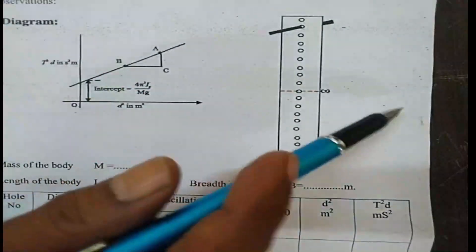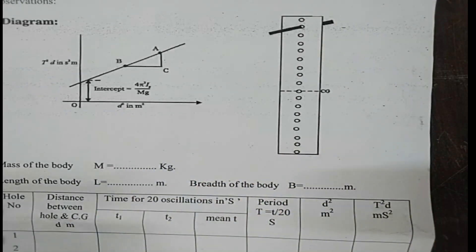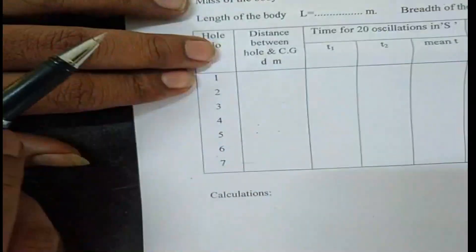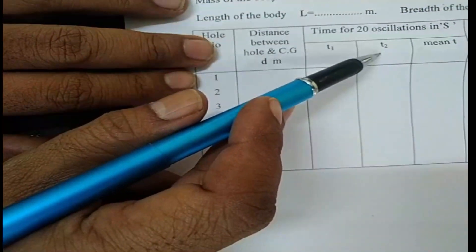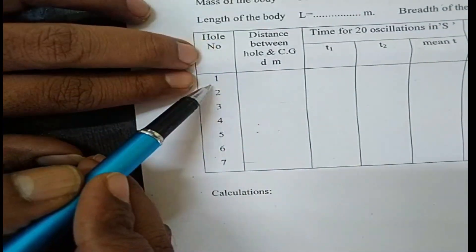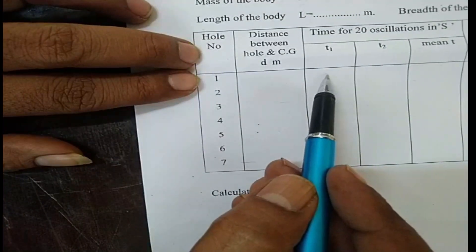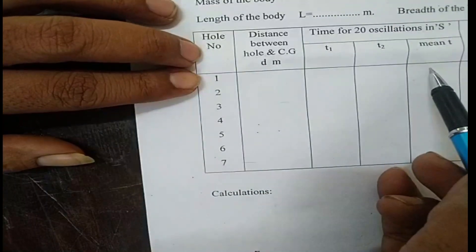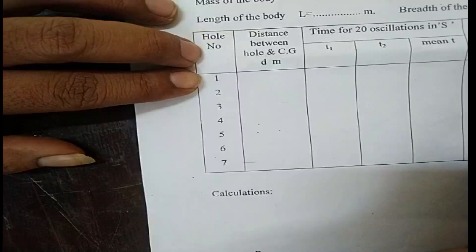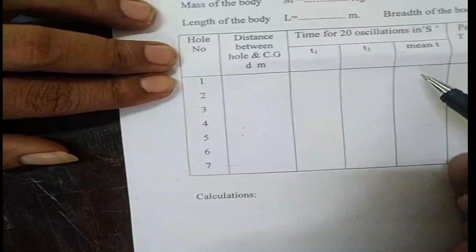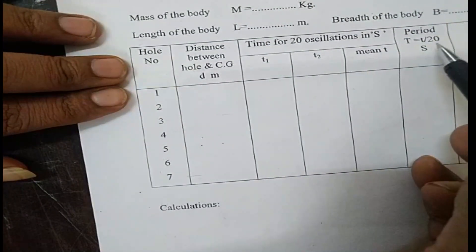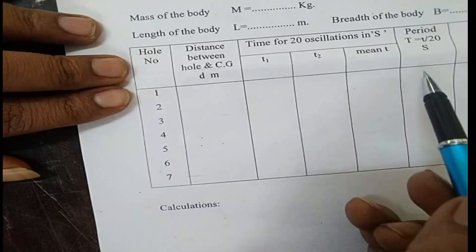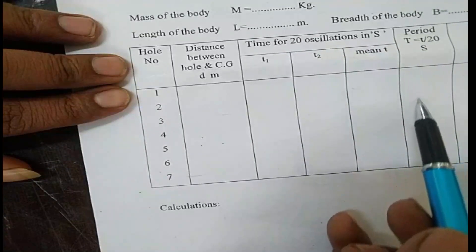This bar pendulum should be oscillated about its mean position, and you find the time taken for either 10 or 20 oscillations. Here, time for 20 oscillations is recorded in seconds across two trials T1 and T2 — repeating the experiment twice for each hole number. The mean of T1 and T2 is taken as mean t. Then the period T = t/20 (or t/10 if done for 10 oscillations). Calculate the period of oscillation — time taken for one oscillation — for all trials.